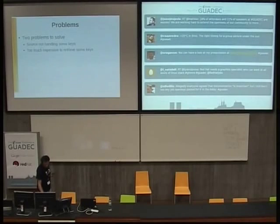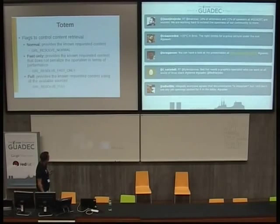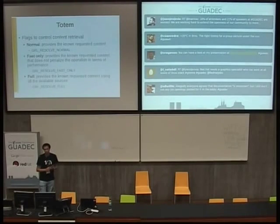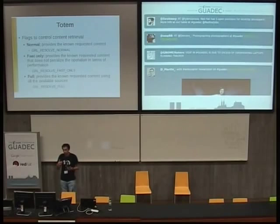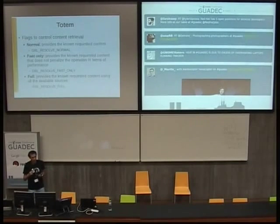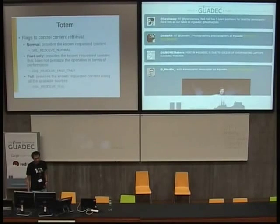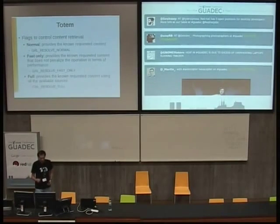Grilo helps you solve this problem using some flags to control how content is retrieved. The normal flag just goes to, say, YouTube, gets the content, and tries to provide all the keys and all the information it has. If there is some information YouTube can't provide, that key will be empty. But if there's information that takes a lot of time to retrieve, it will still be retrieved.